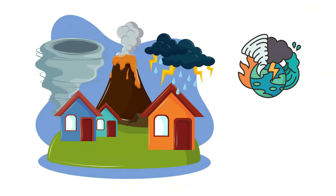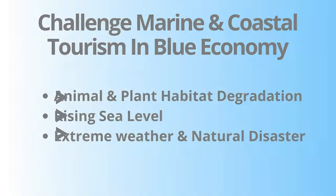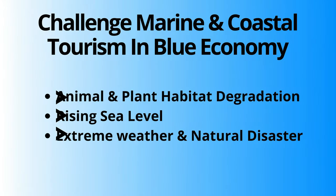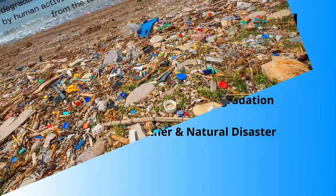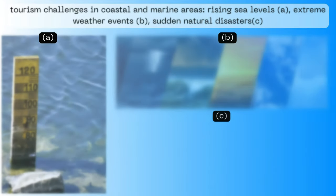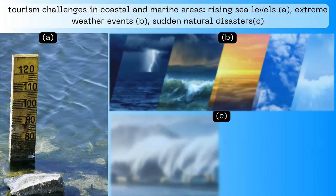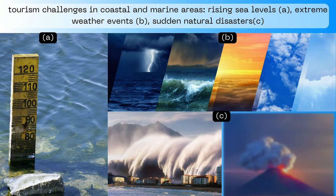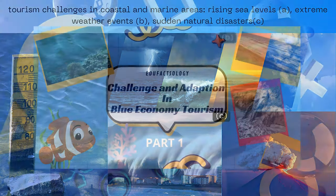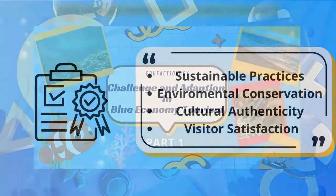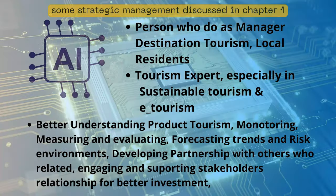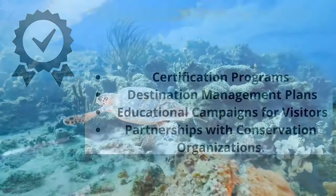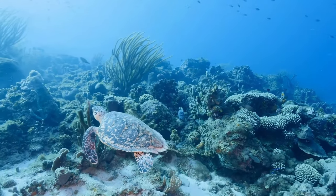It is important to be vigilant near coastal areas, as they have the potential to be dangerous. This video will explore the impact of habitat destruction caused by tourism development and the threats facing coastal and marine regions, including rising sea levels, extreme weather events, and the risk of natural disasters such as tsunamis near tectonic plate activities. The video is a continuation from the first part, focusing on the need for strategic management and innovative solutions to ensure sustainable coastal tourism.